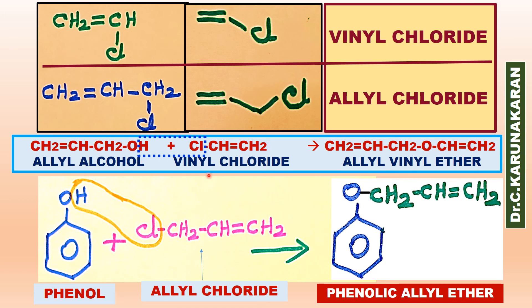What are allyl and vinyl groups? This is vinyl chloride, used for PVC — polyvinyl chloride — with formula CH2=CHCl. This is allyl chloride, also CH2=CHCl but with one additional CH2 group.